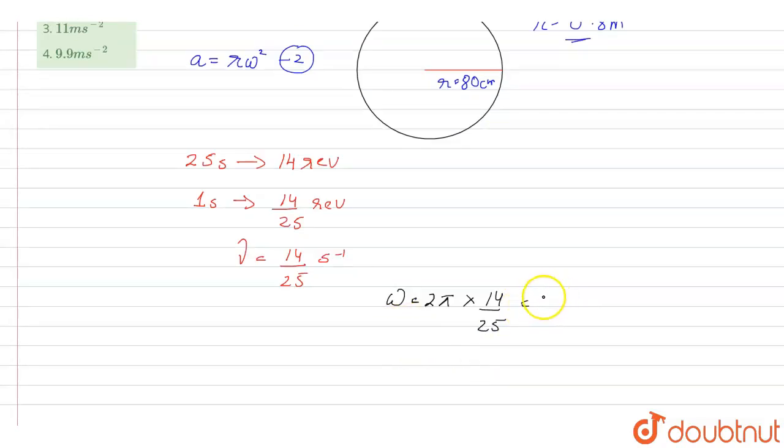So omega will be equal to, 2 into 4, 4 into 8, that will be 88 by 25.